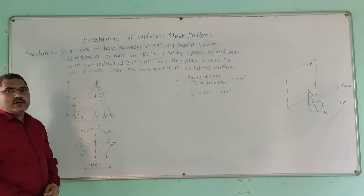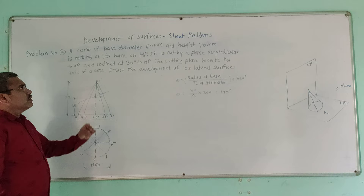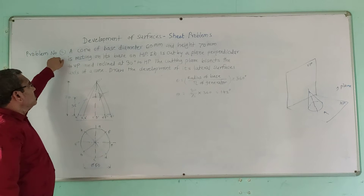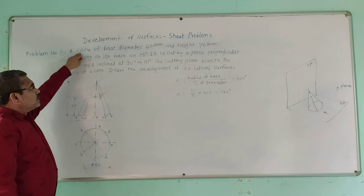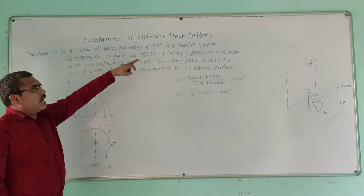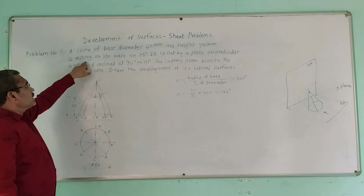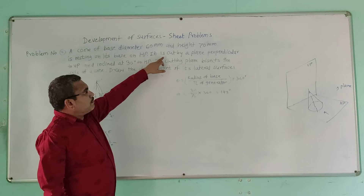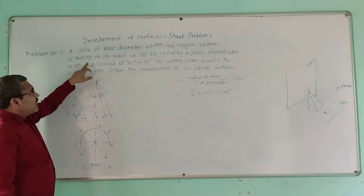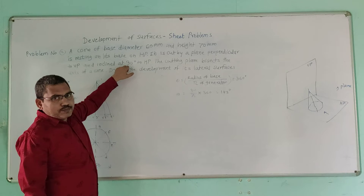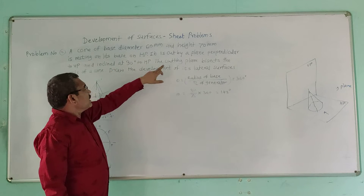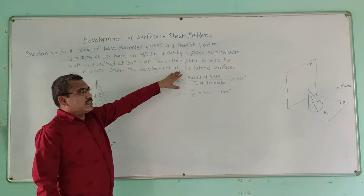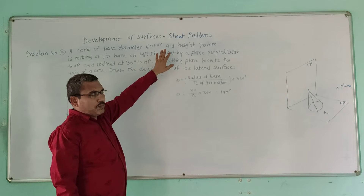We will discuss problem C of development of surfaces, problem number 2. A cone of base diameter 60 mm and height 70 mm is resting on its base on HP. It is cut by a plane perpendicular to VP and inclined at 30 degrees to HP. The cutting plane bisects the axis of the cone. Draw the development of its lateral surfaces.